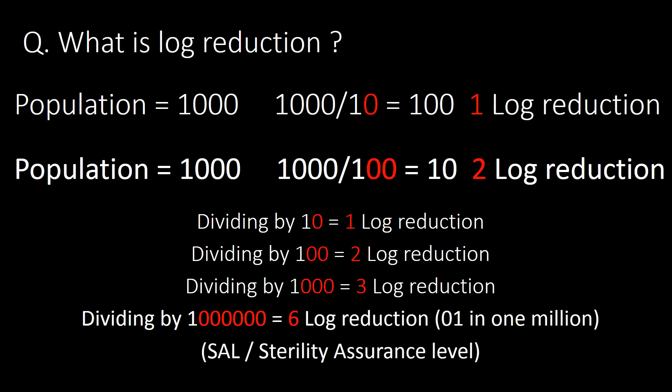What is log reduction? Consider a population of 1,000 on a surface. Dividing by 10 gives a remaining population of 100 — that is one log reduction. Dividing by 100 gives 10 remaining — that is two log reductions. Dividing by 1,000 gives three log reductions. Simply count the number of zeros to find the log reduction. In the case of a six-log reduction, the population is reduced from one million to one.